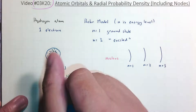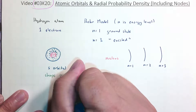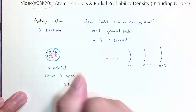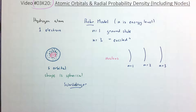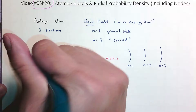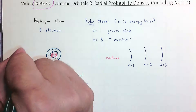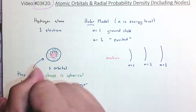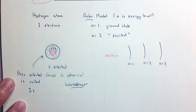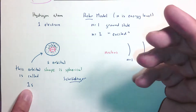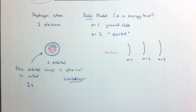Let us attribute this to Schrödinger's equation. More specifically, for the hydrogen atom — since it has one electron and the ground state is n equals 1 — this orbital is specifically called 1s. The '1' stands for the energy level we get from Bohr, and the 's' we'll call spherical. Not all atomic orbitals are spherical, but this is the first atomic orbital we should learn about.